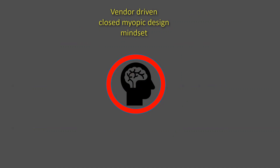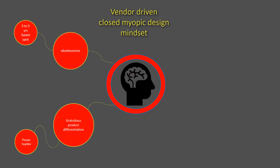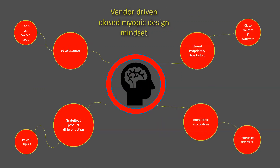Vendor-driven closed myopic design mindset — what are their motivations? They want to build in obsolescence, with a three-to-five year sweet spot. Gratuitous product differentiation — power supplies. Closed proprietary user locking, as with Cisco routers and software. Monolithic integration: tying together the hardware and the software with proprietary hardware and software in order to lock in the user into that vendor solution. It also includes proprietary firmware, and if a vendor decides not to support that firmware anymore, then effectively you can't use the hardware.